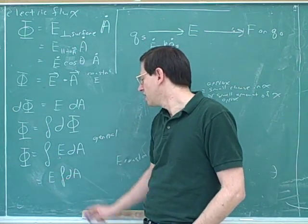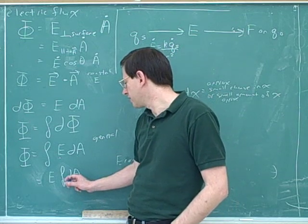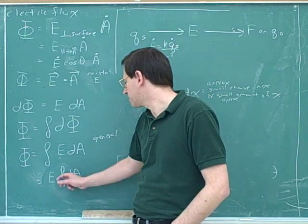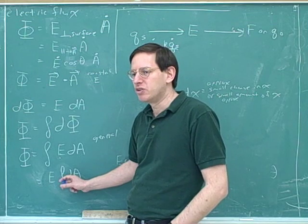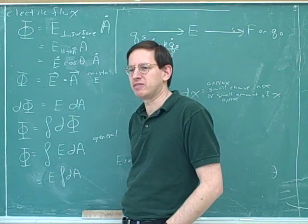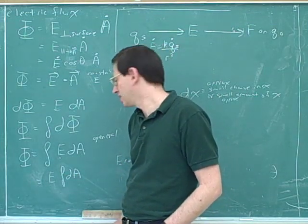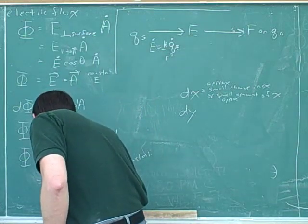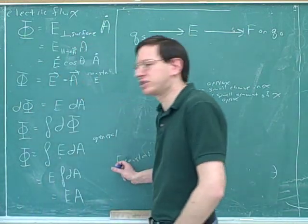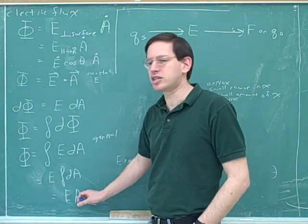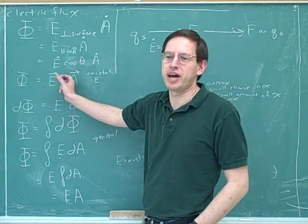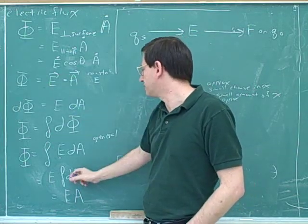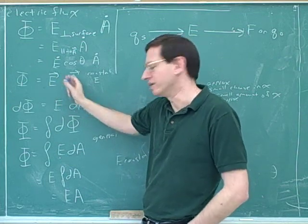Now, what is this remaining integral? We're summing up all the small amounts of area. What would happen if you sum up all the small amounts of area? You get the total area. So if E was constant, you would get this simpler formula — which stands to reason because we knew that was the formula for constant E all along. This shows that the general integral formula is totally consistent with what we saw before.